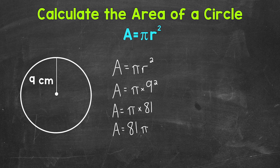One way to write the area of a circle is to write it in terms of pi — we write our number in front of the pi symbol and put our unit of measure. When working with area, it's going to be square units. So we have area equals 81 pi square centimeters. That's one way to write our answer: in terms of pi.